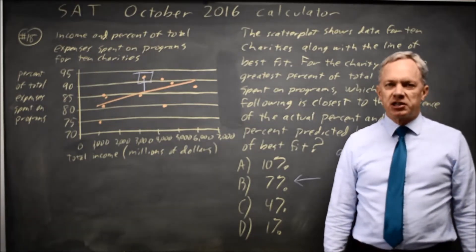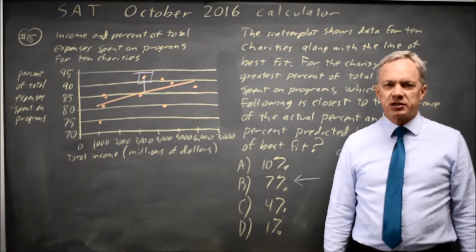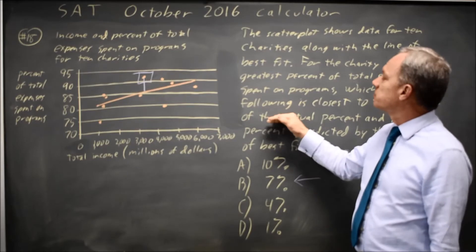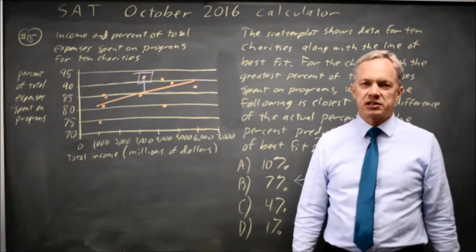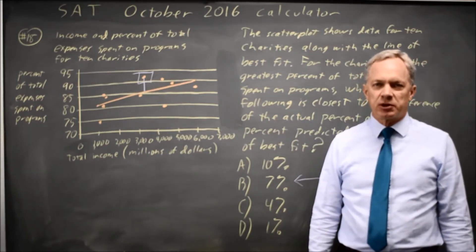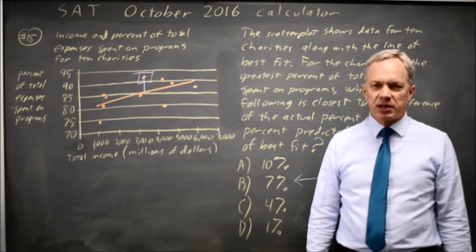College Board will occasionally ask you for the difference between a line of best fit and the actual data point. In general, you're looking vertically. Read the question carefully to make sure that is the value they're asking for, but that's the most common question. Come back soon for my next math video. With math, there's always more.